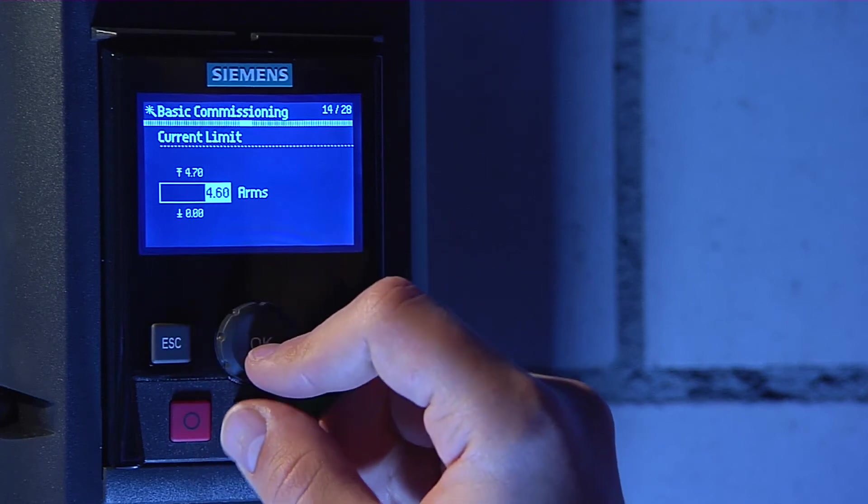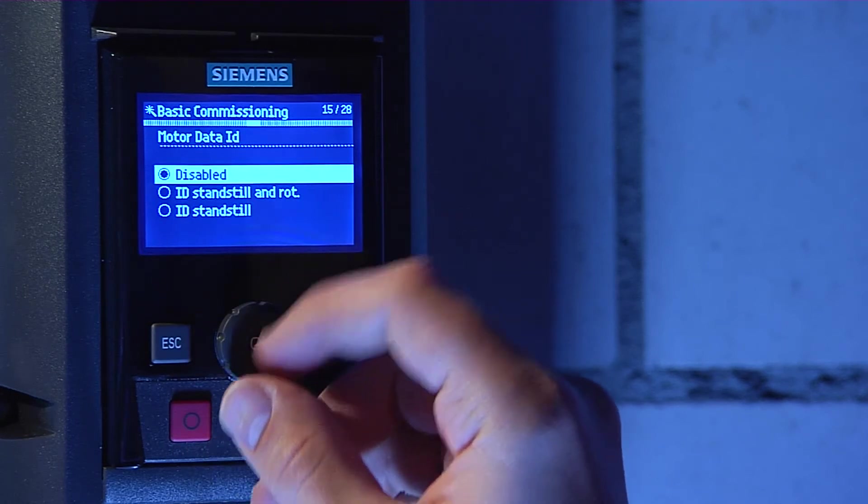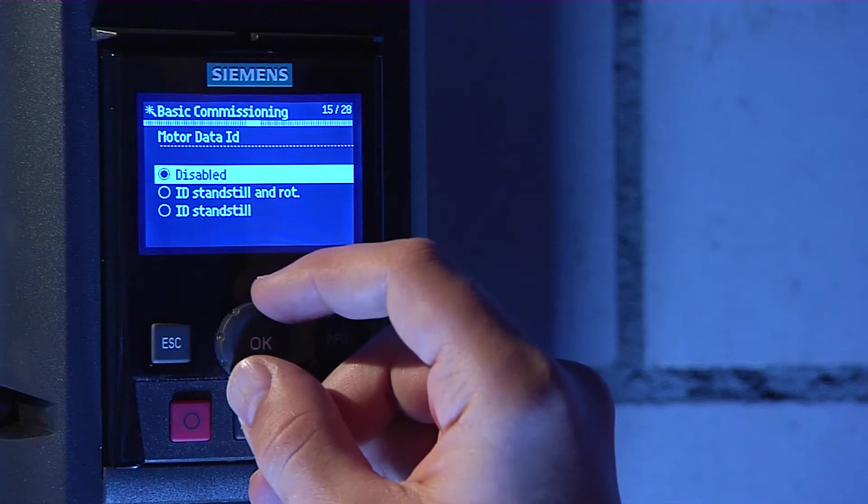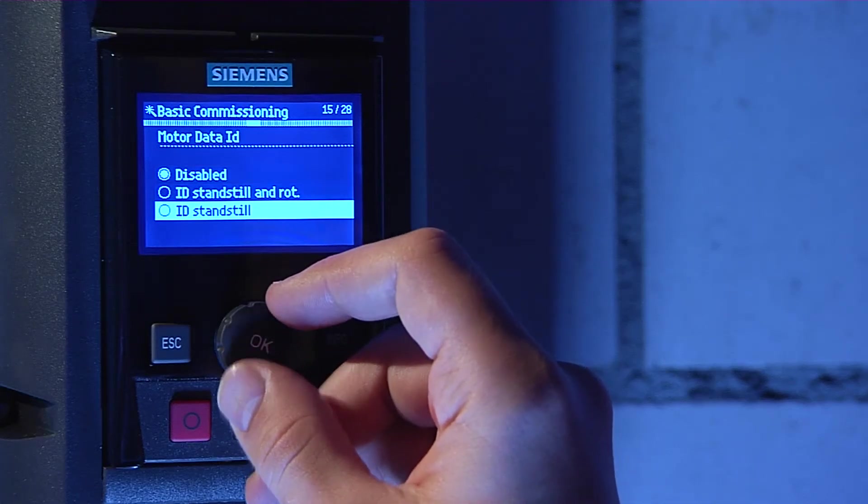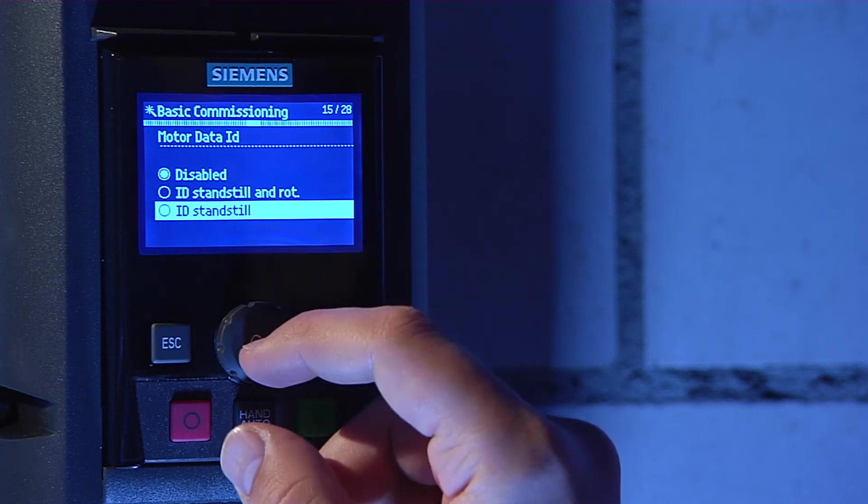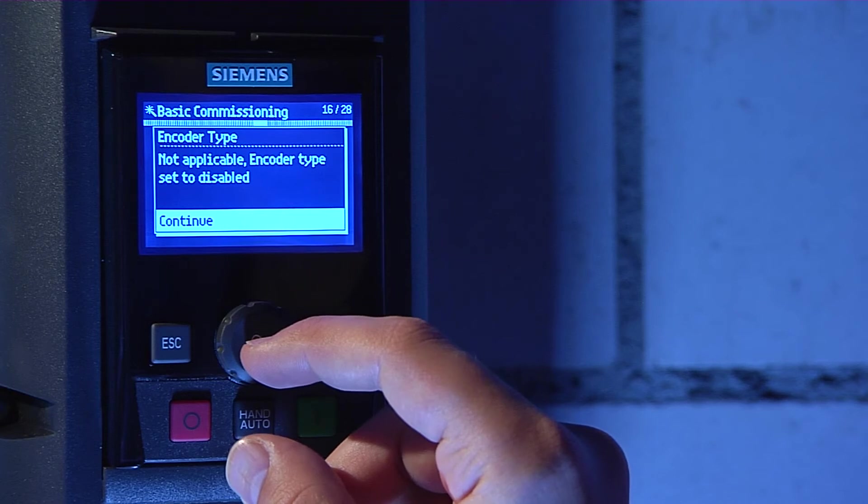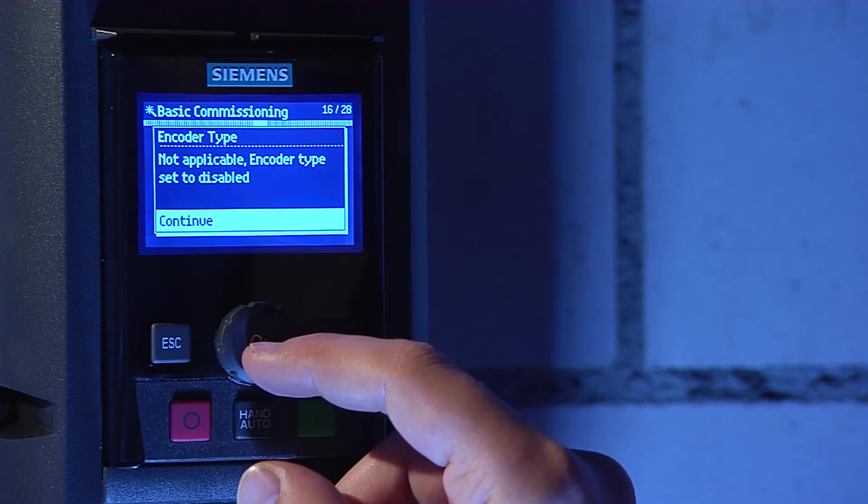It is recommended to always perform a motor ID in order to optimize the settings of your drive. For V2F control, choose motor ID at standstill. When using sensorless vector control, it is recommended as long as it is safe to do so, to choose motor ID at standstill and when rotating.